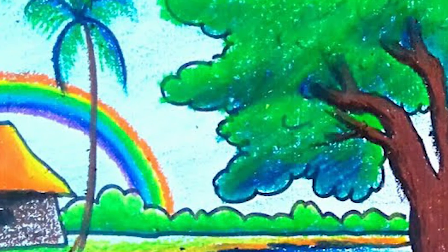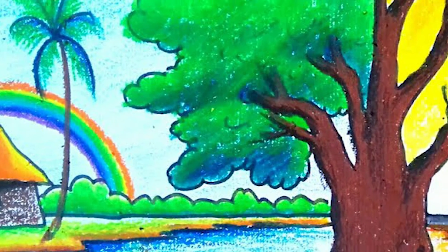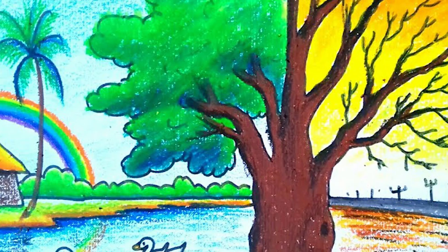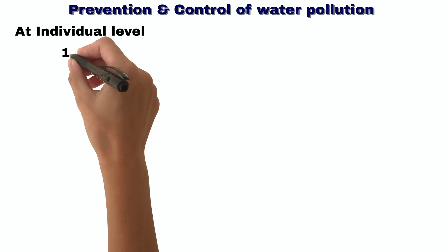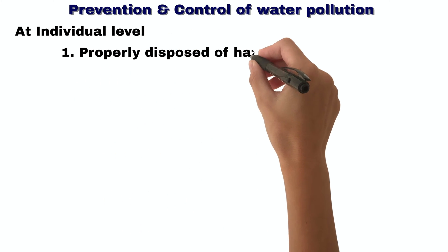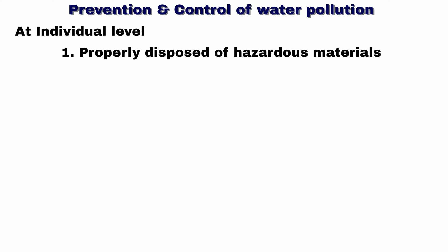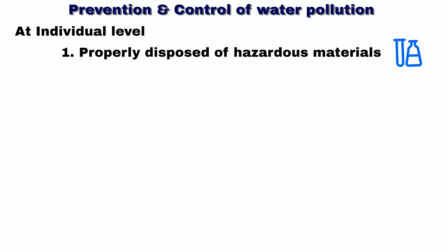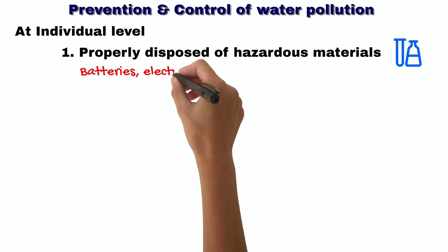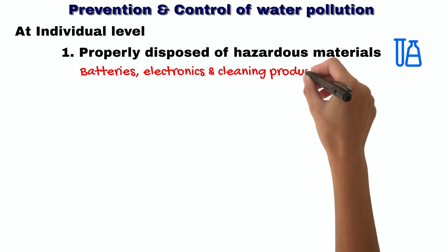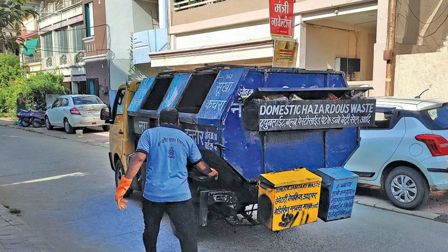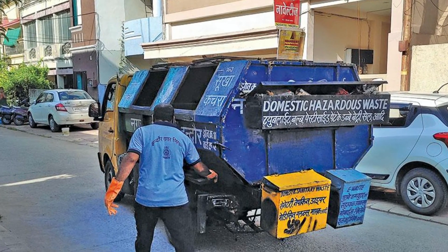At the individual level, there are several things you can do to prevent water pollution. Properly dispose of hazardous materials — many household items contain hazardous chemicals that can be harmful to the environment if not disposed of properly. Make sure to dispose of items such as batteries, electronics, and cleaning products at a designated hazardous waste collection site.